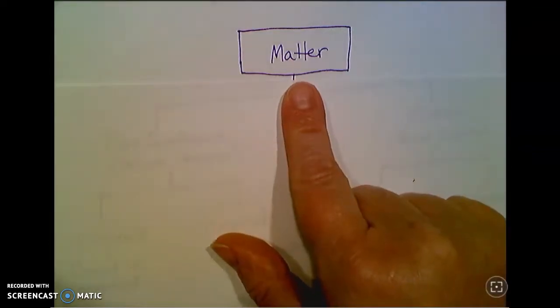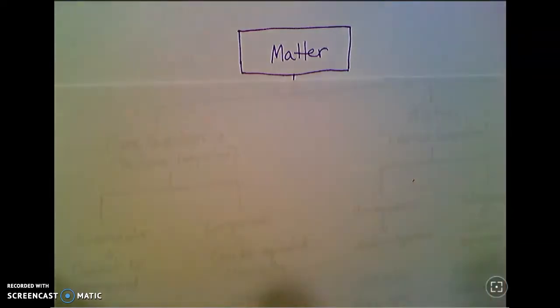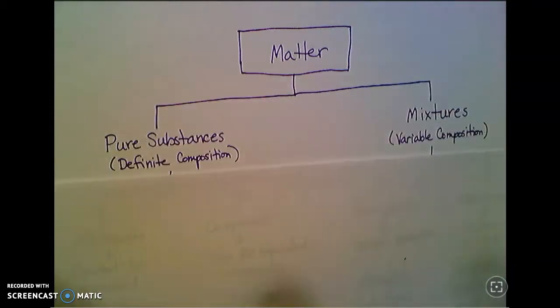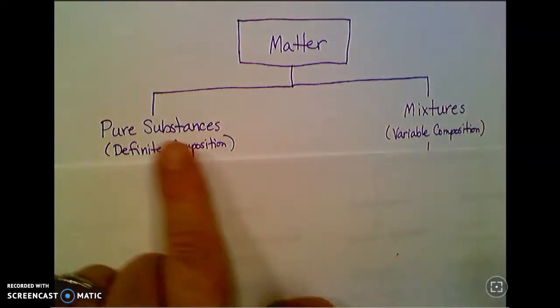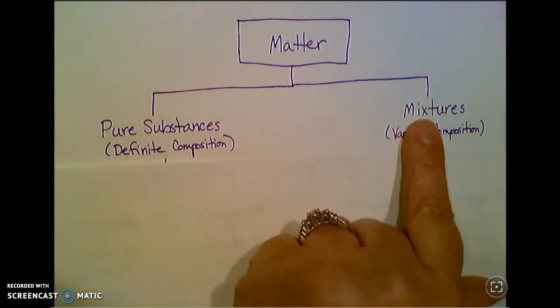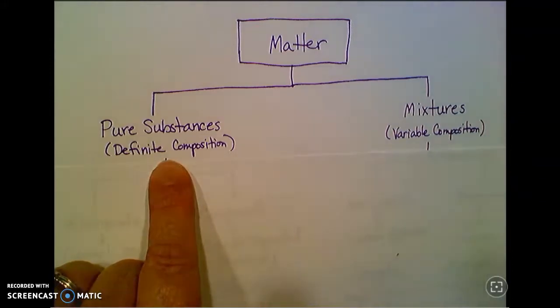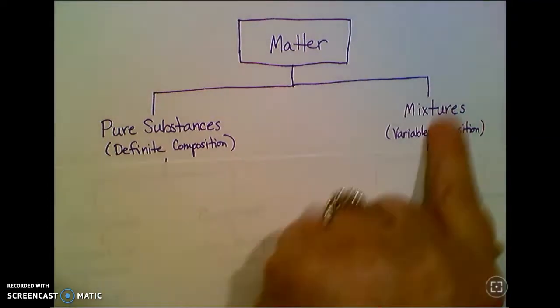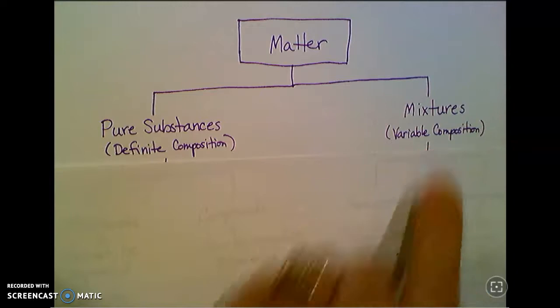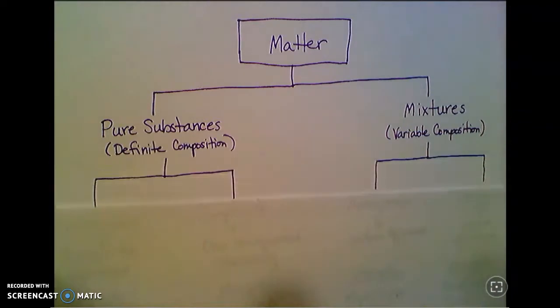When we talk about matter, and we will talk a lot about matter because chemistry essentially is the study of matter, we're going to classify it in a couple of ways. There are two really big divisions. All matter will fit into either the category of pure substances or mixtures. Pure substances have definite composition. Mixtures have variable composition, and that gives you an idea of how we can tell the difference between them.